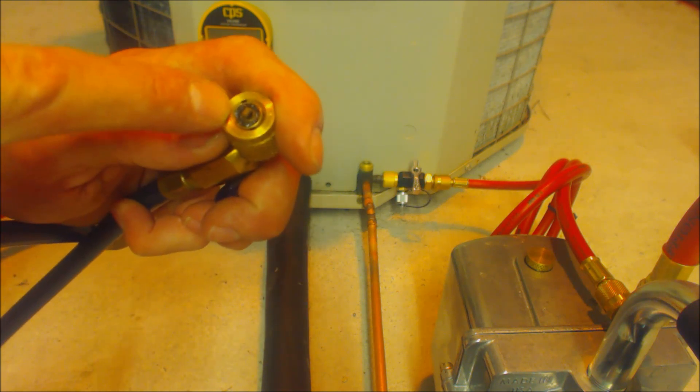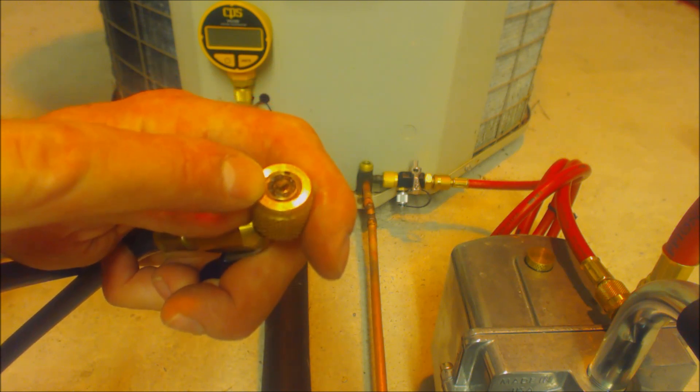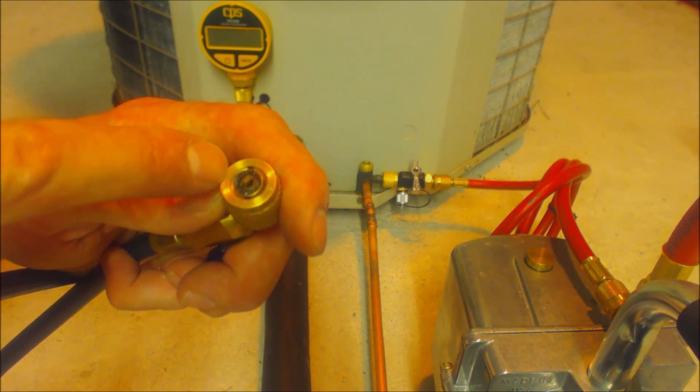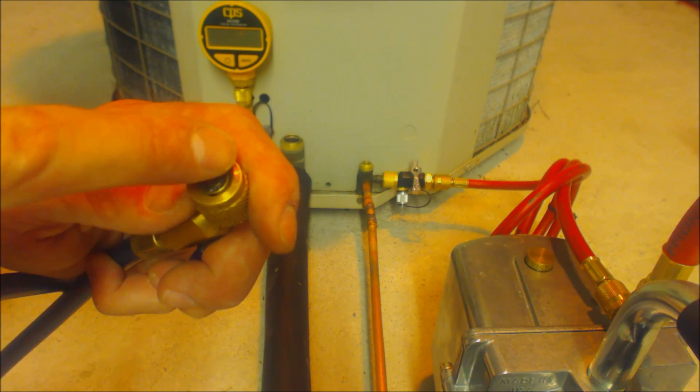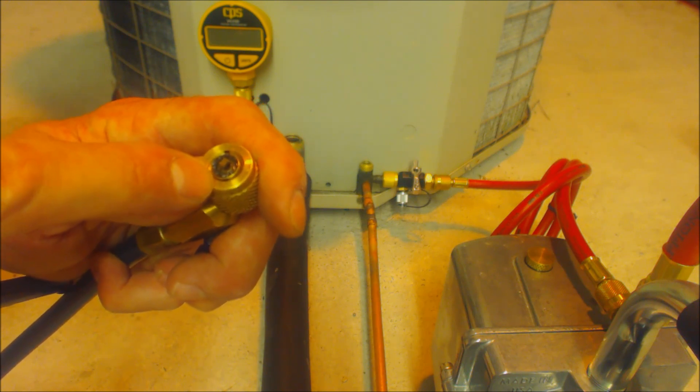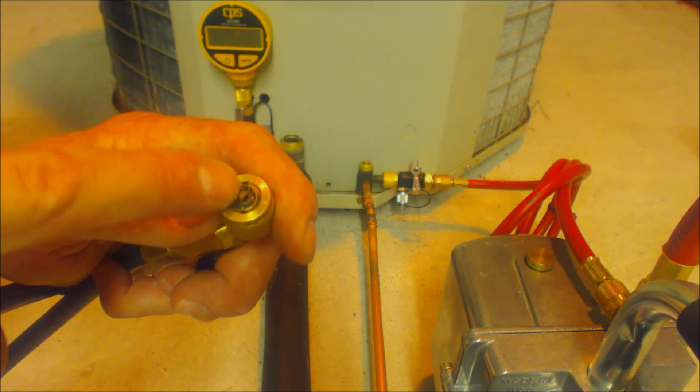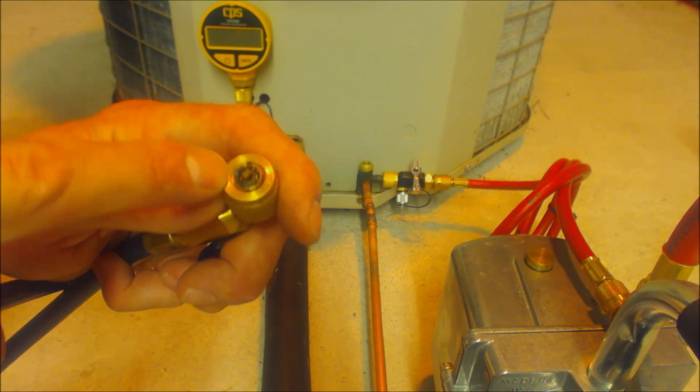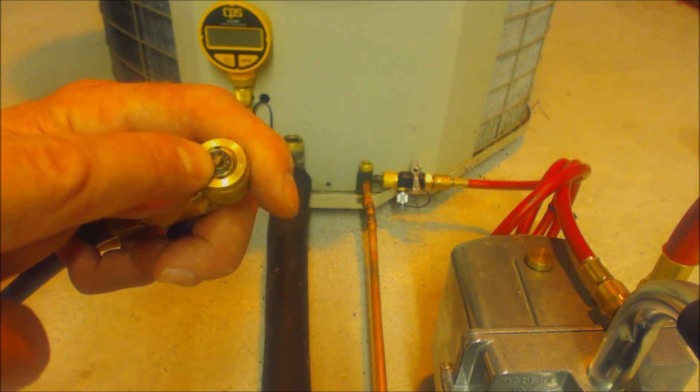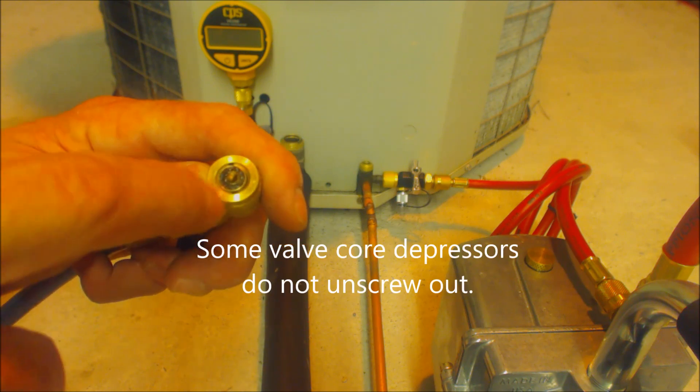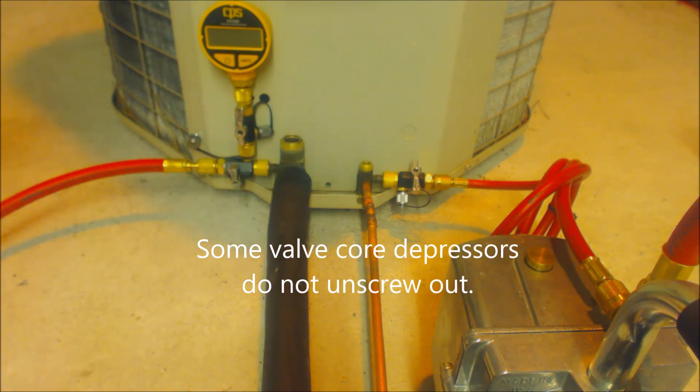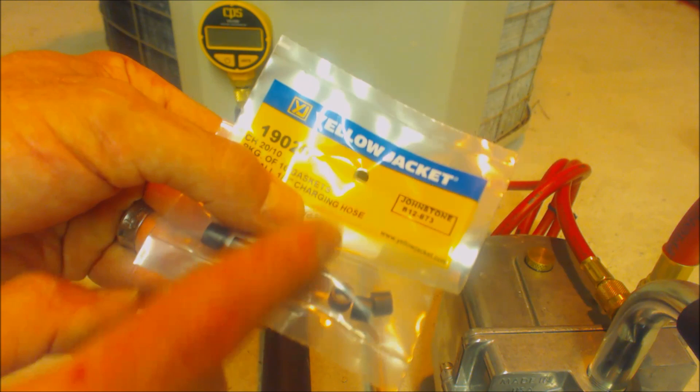One thing is that the gasket inside could be all chewed up. That's just due to the refrigerant oil eating at it or maybe tightening the connection in too hard. So that can be replaced. You just pull the inner core depressor out with a pair of needle nose, unscrew it out, then pull it out and replace it with these new gaskets.